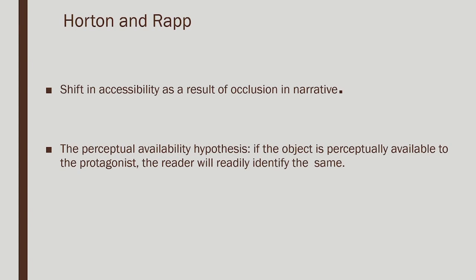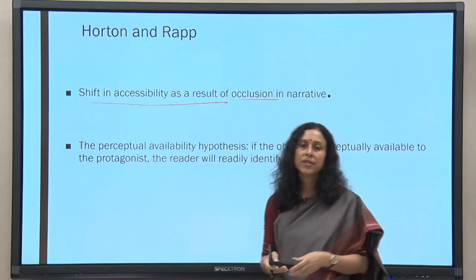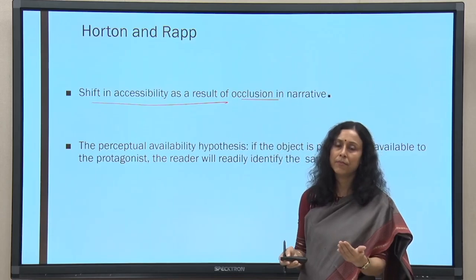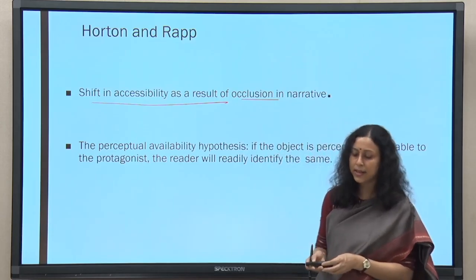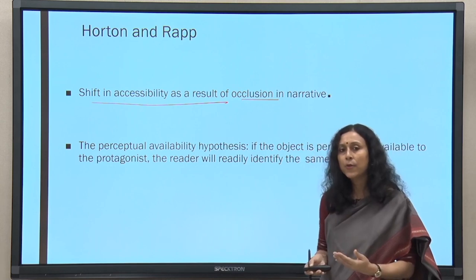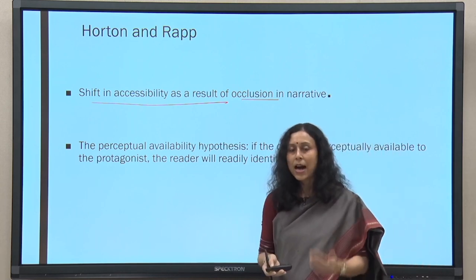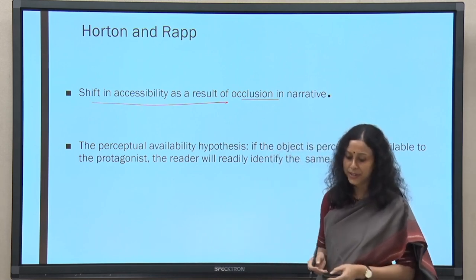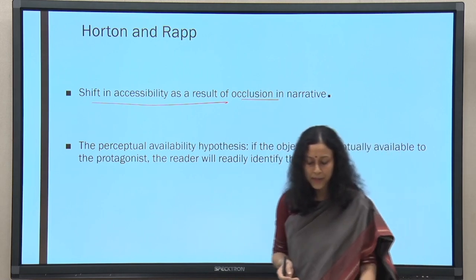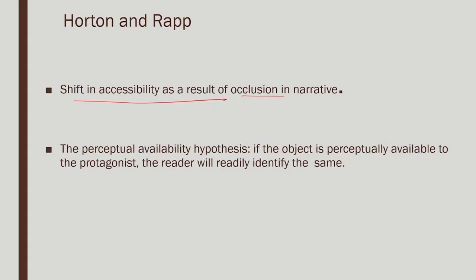Similarly, there is yet another interesting study — Horton and Rapp — who looked at shift in accessibility as a result of occlusion in the narrative. Occlusion means something coming in front of or blocking the view — so you could see something and then something comes between the viewer and the object. If that kind of scenario happens in a narrative, how does it impact the identification of the object? This is the perceptual availability hypothesis: if the object is perceptually available to the protagonist, the reader will readily identify it.